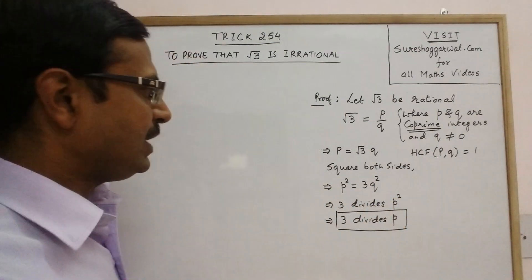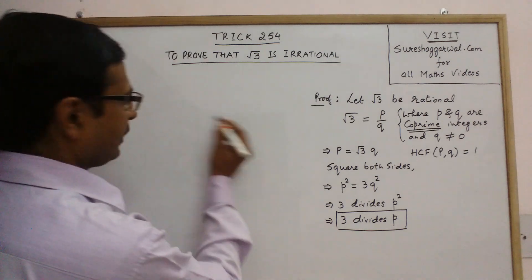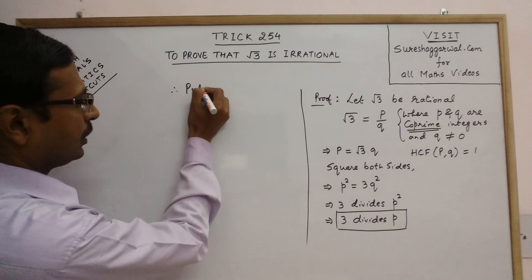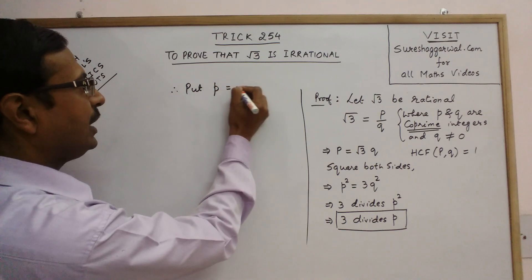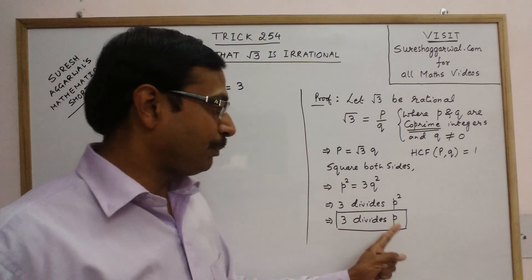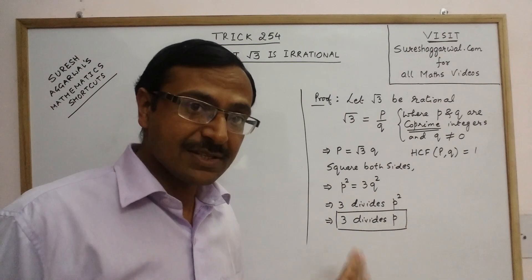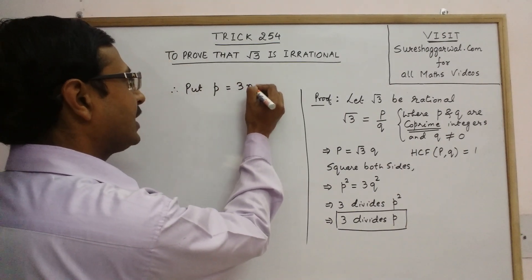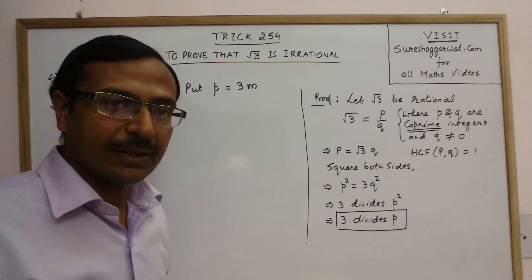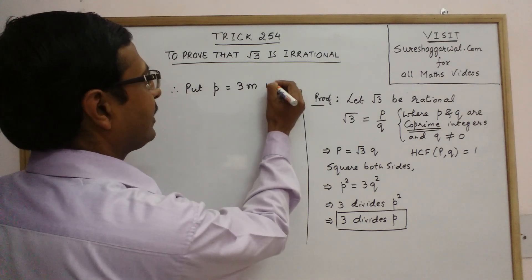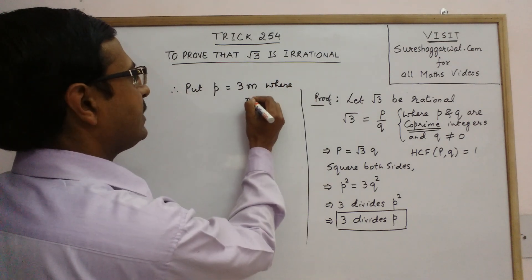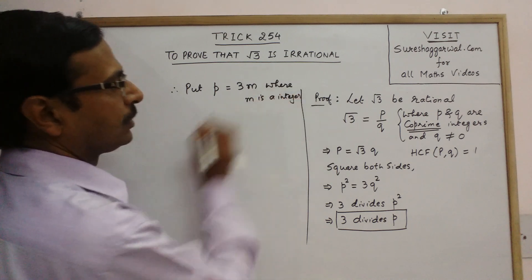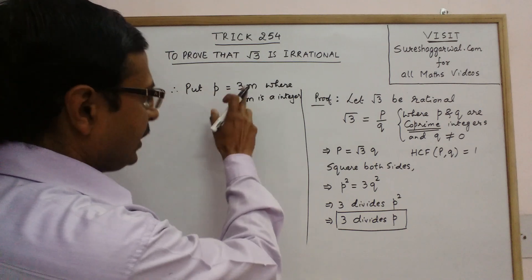Now if 3 divides p, then we can put p equal to 3 into something. Obviously if 3 divides p, 3 is a factor of p, then we can put p as 3 into something. That something I will call m where m is any integer.